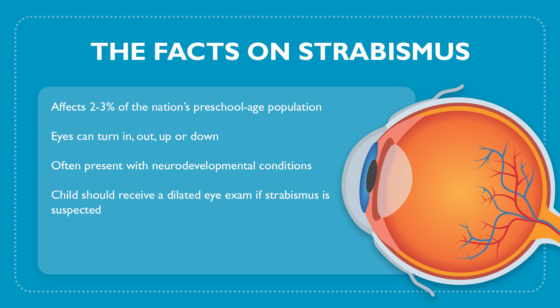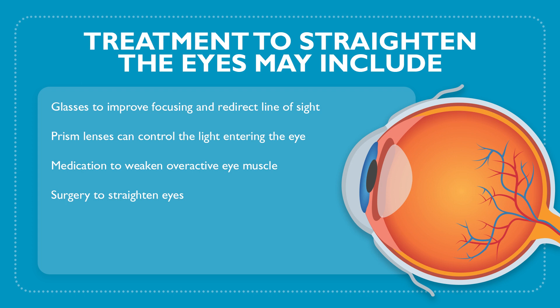In order to treat strabismus, we want the child to have a complete dilated eye exam to determine the best course of treatment. Treatment options can look like a simple pair of glasses to improve focusing and redirect that line of sight. Sometimes the glasses may involve prism lenses. It may include medication including eye drops which help the eye to relax and calm down those overactive eye muscles, or there may be surgery to correct those faulty muscle attachments in the eyes and straighten them out.